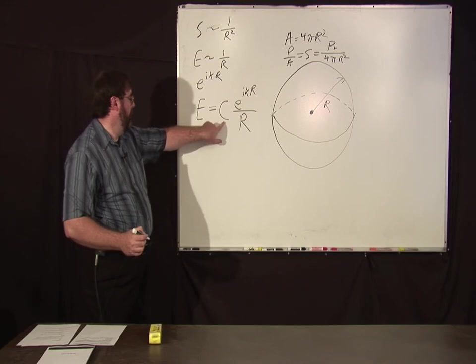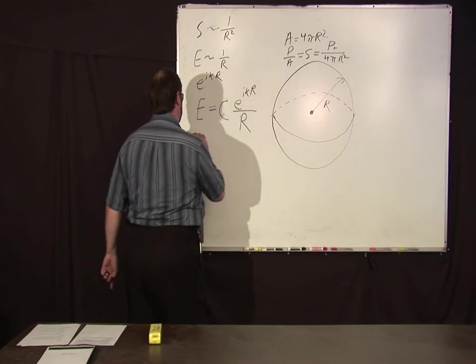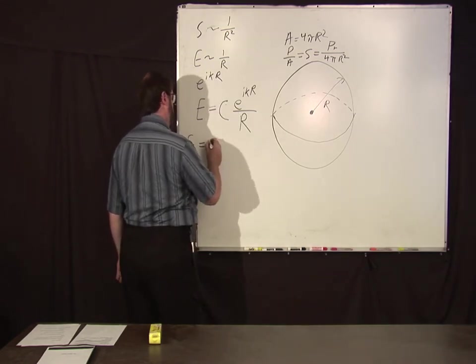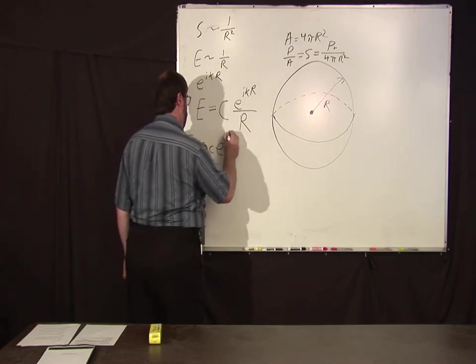We can break this into a real and imaginary part, just for fun, or sorry I mean a magnitude and phase. So we'll say this is some real number c times e to the i phi.